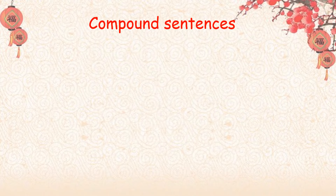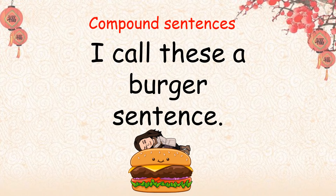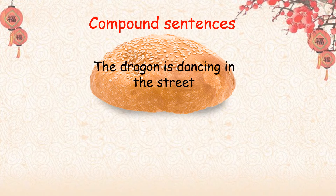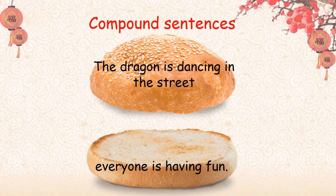A compound sentence I like to call a burger sentence, because we have two clauses, like two buns, and we pop it together with a burger, and on our burger we have an 'and.' The first clause, the first bit of our sentence, is going to be: the dragon is dancing in the street. Perfectly good clause — it is a beautiful sentence on its own, but we're going to make it even better by adding a second clause: everyone is having fun.